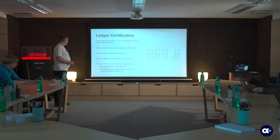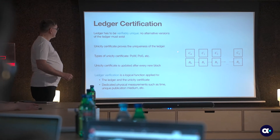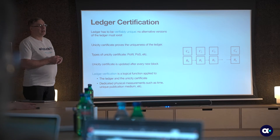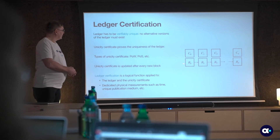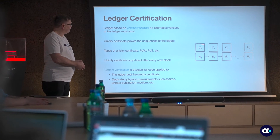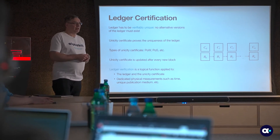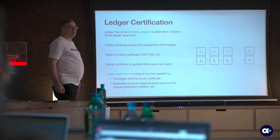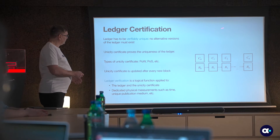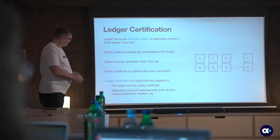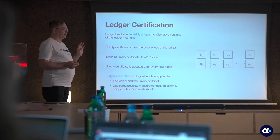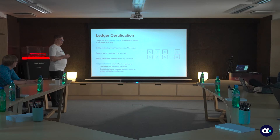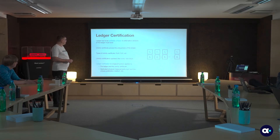For proving the unicity of the ledger, we use certificates. Every time we create a new block, we also create a certificate. For the Genesis block B0, we have a unicity certificate C0. The sequence of unicity certificates forms the unicity certificate of the whole ledger. There are different forms of unicity certificates: proof of work, proof of stake, etc.